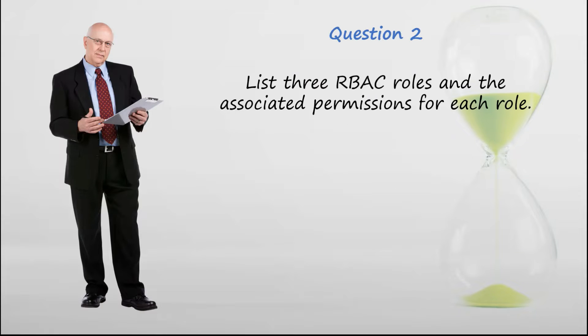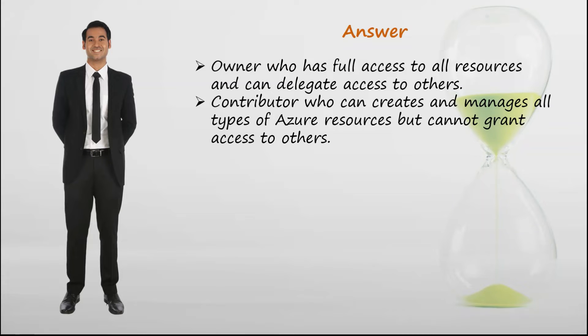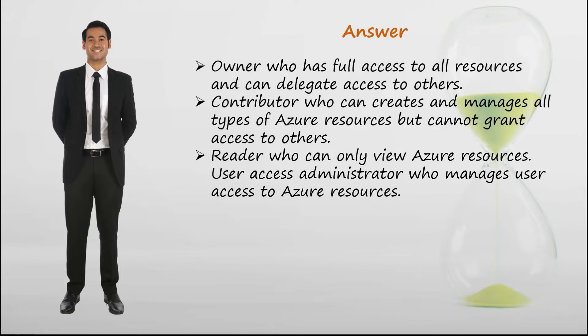List three or more RBAC roles and the associated permissions for each role. Owner has full access to all resources and can delegate access to others. Contributor can create and manage all types of Azure resources but cannot grant access to others. Reader can only view Azure resources. User Access Administrator manages user access to Azure resources. Other roles are possible.